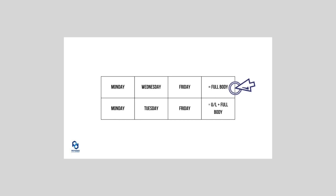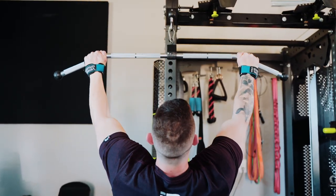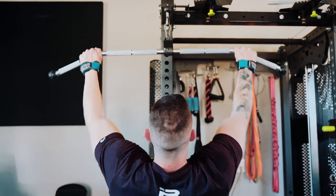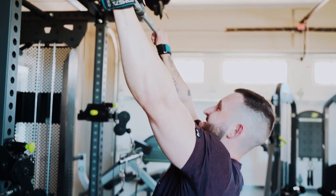Option two is going to be an upper-lower with a full body workout attached to the third day. That example is going to be used if we're going to the gym on Monday and Tuesday — two back-to-back days. We have a couple of rest days in between and then one more opportunity for a third workout later in the week.